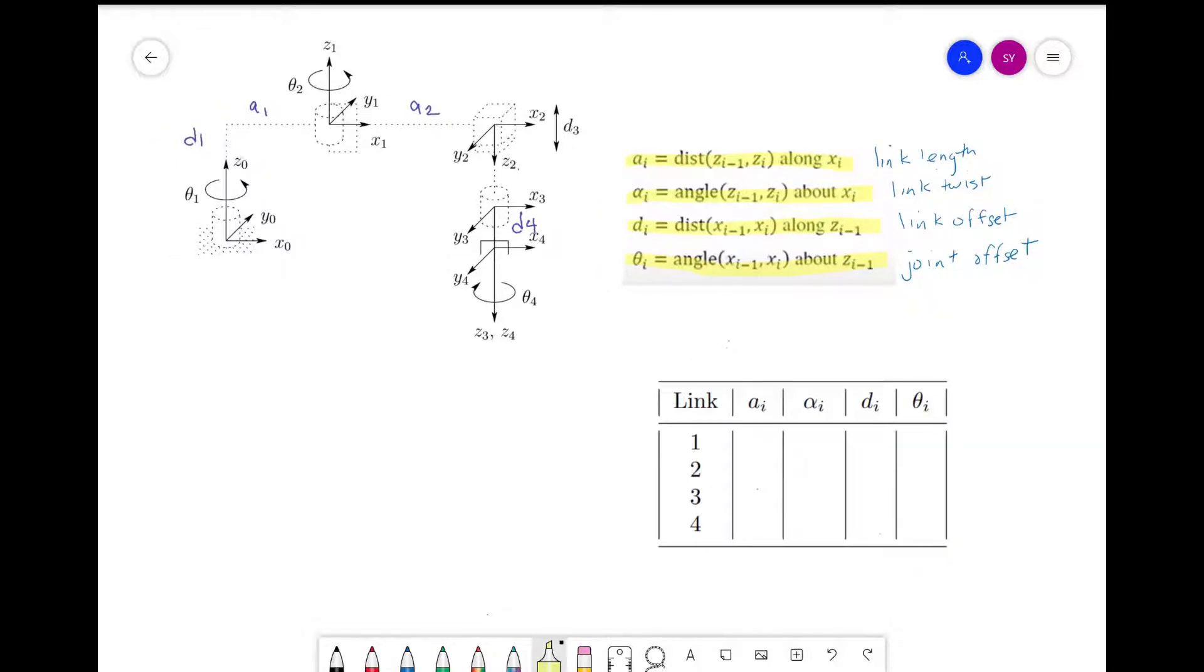For link one, we see that the distance from z_0 to z_1 measured along the x_1 axis is a_1. So that is our a_1. For alpha, we see that the axes are in the same orientation. So alpha is zero.